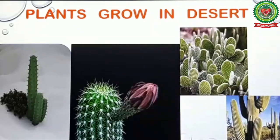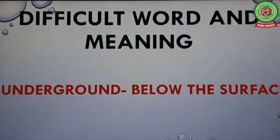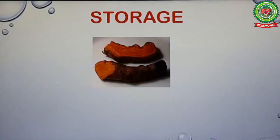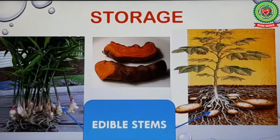Potato is an underground stem — it stores food in it. Underline 'underground' and write its meaning: below the surface. Ginger is another stem that grows under the ground and stores food in it. We eat both of them as food. Some stems like turmeric, ginger, and potato grow under the ground. Such stems store food and are eaten by human beings, so these are called edible stems.